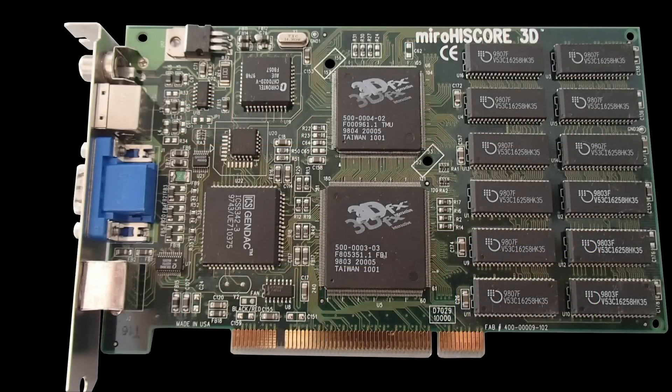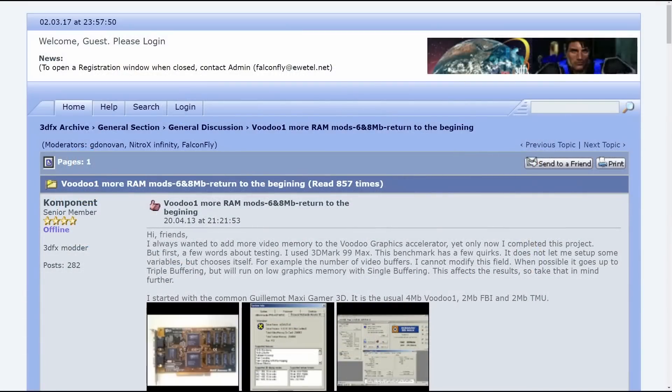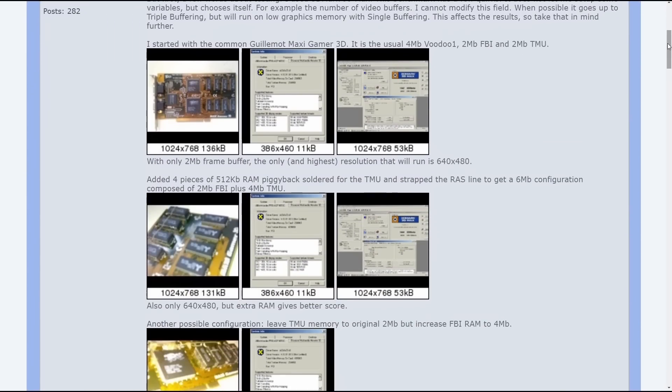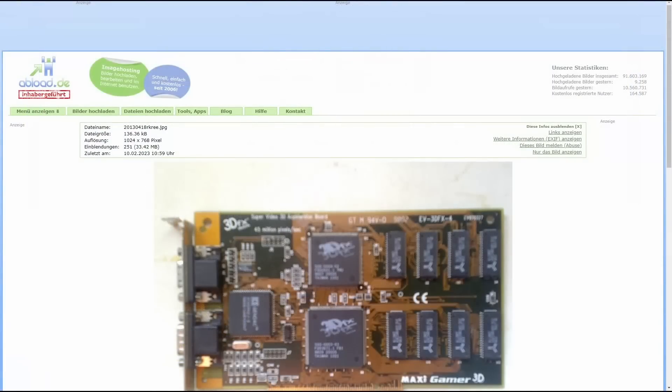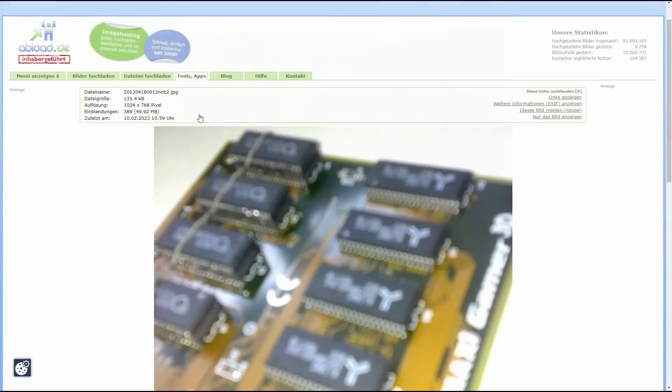The Miro High Score 3D came with 6 MB of graphics memory. And then there was the Skywell Magic 3D Plus 1, an example of a Voodoo card with 8 MB of memory. I was made aware of higher memory models while stumbling over a post from 2013, where the user component posted a mod how to upgrade a 4 MB MaxiGamer 3D to 6 and even 8 MB of memory.